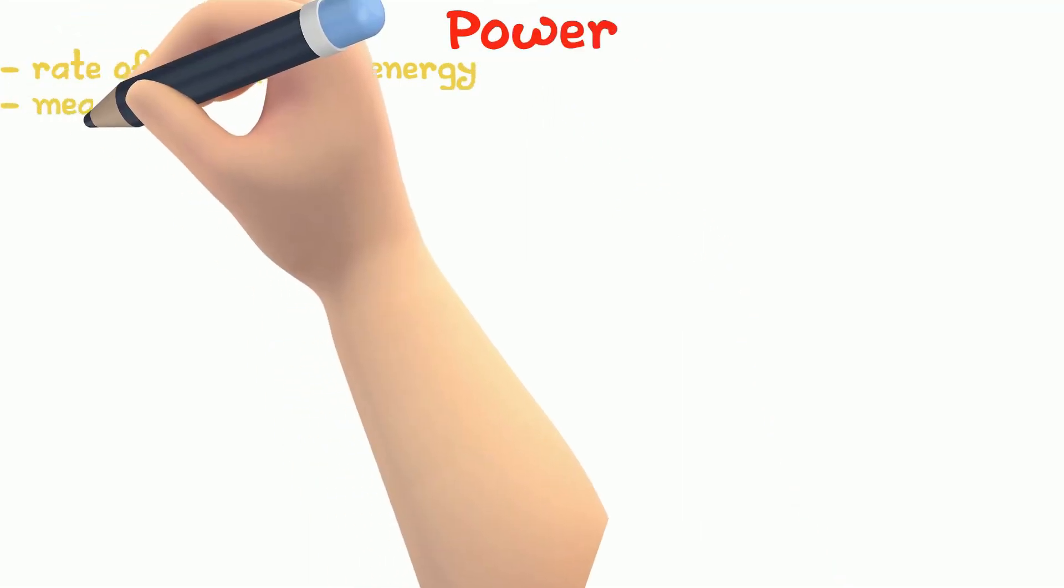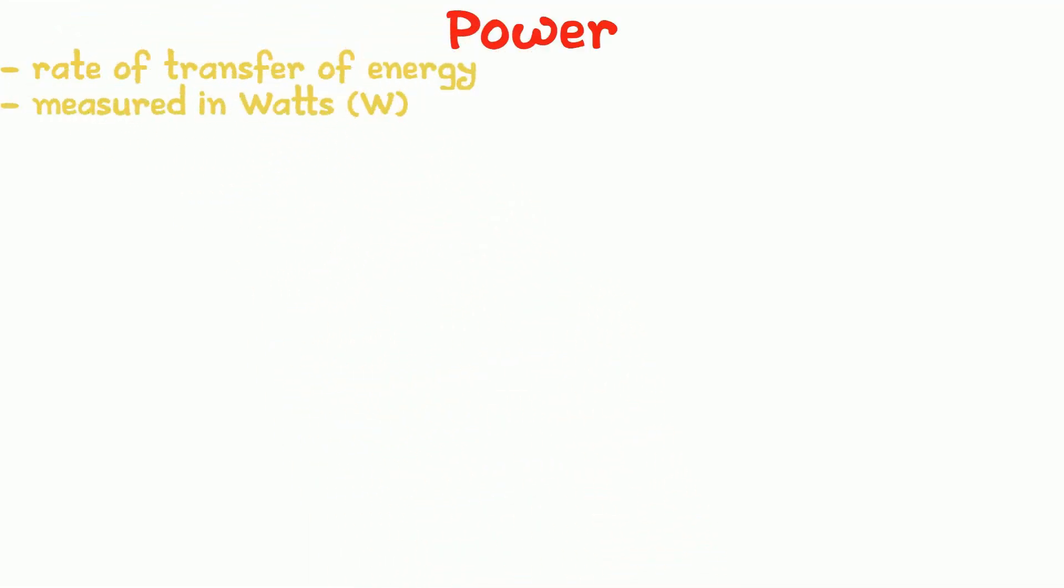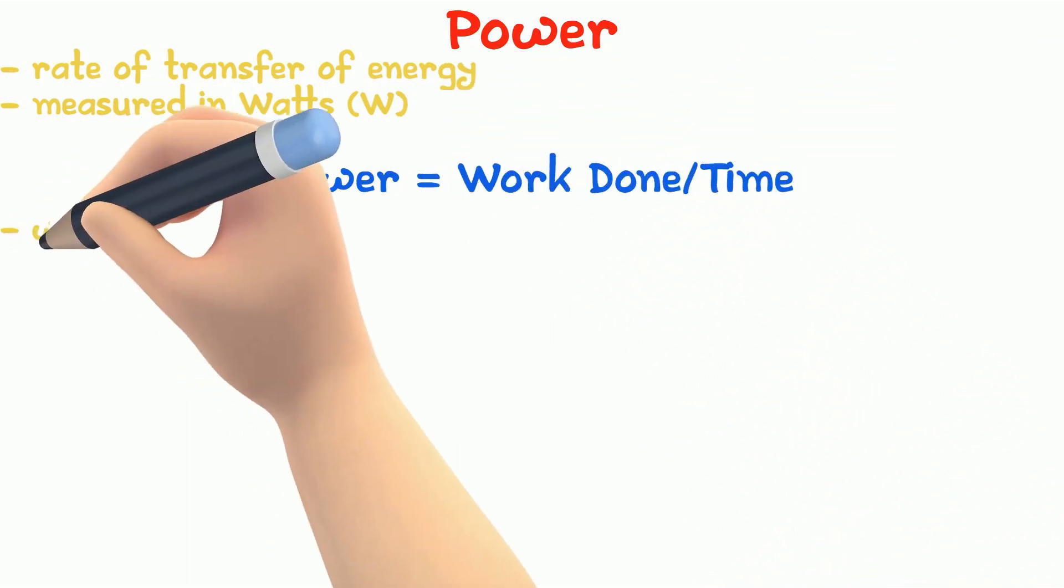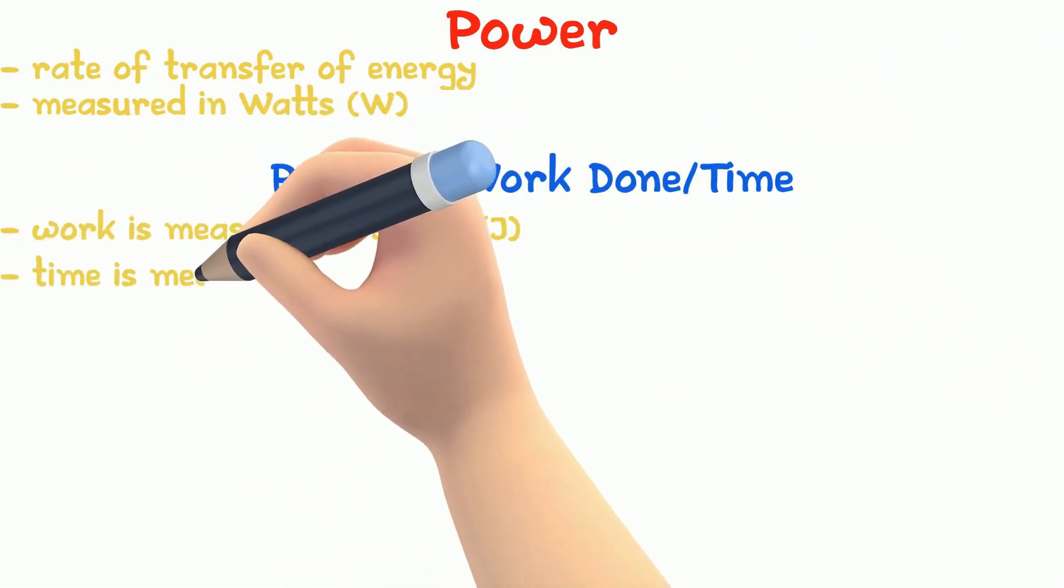Power is the rate of transfer of energy. Power is measured in watts. You can calculate the power using the equation power equals work done over time taken. Work is measured in joules and time in seconds.